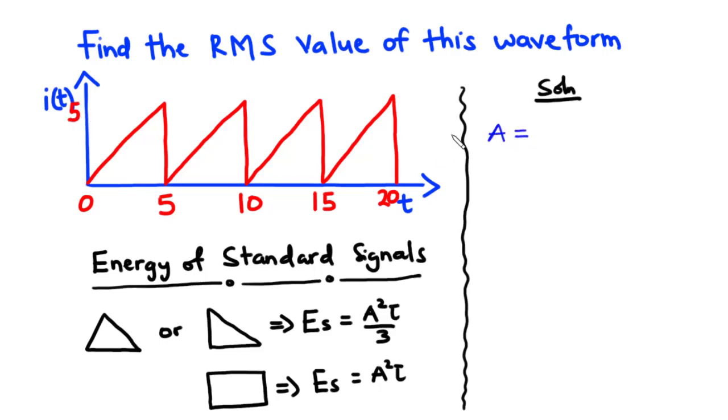The amplitude of the signal is 5 and the first cycle of the signal spans from 0 to 5, and the second 5 to 10, so the period of the signal is equal to 5.